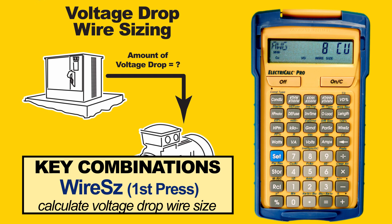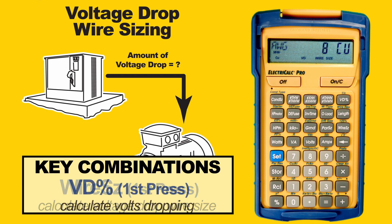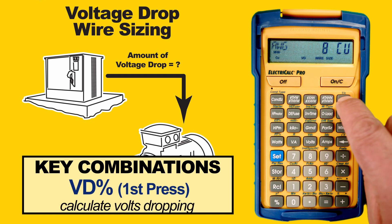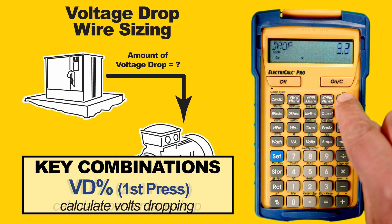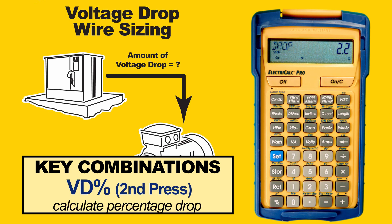Voltage drop is affecting that wire size. If I press the voltage drop key, it tells me that 5.3 volts are dropping. If I press it again, I see the percentage drop, which is 2.2%, which is well below my 3% maximum limit.